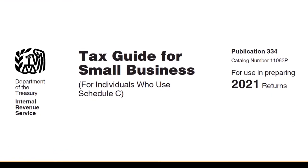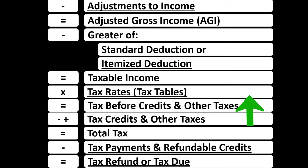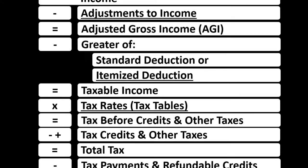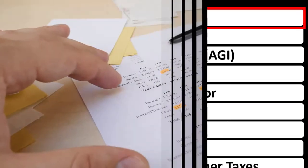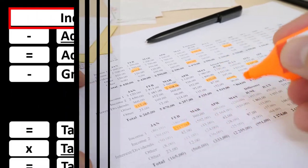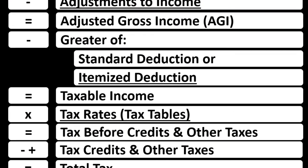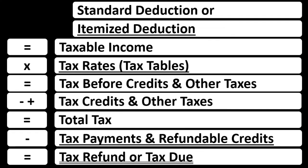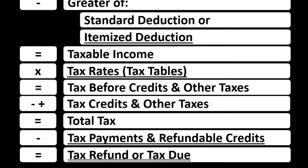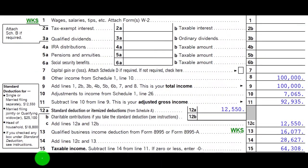Most of this information can be found in Publication 334, Tax Guide for Small Business, tax year 2021. Looking at the income tax formula, line one income — although there would be a supplemental schedule, basically an income statement with income and expenses — we're focusing in on the expense side of things here, expenses basically being deductions, the net then rolling in to line one income of the income tax formula.